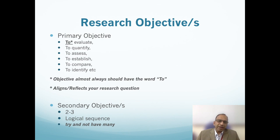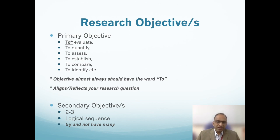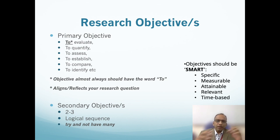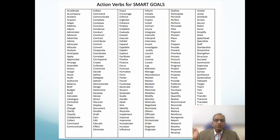Research objectives are stated as either primary or secondary. The primary objective is a single main question you would like to investigate, usually stated as: to evaluate, to quantify, to assess, to establish, to compare, to identify — and it must align with both your research question and research hypothesis. You can have further secondary objectives, but try to stick to about two to three, because every objective must have an analysis done and an outcome presented. There must be a logical sequence to these secondary objectives. Objectives are assessed through the SMART criteria: specific, measurable, attainable, relevant, and time-based.